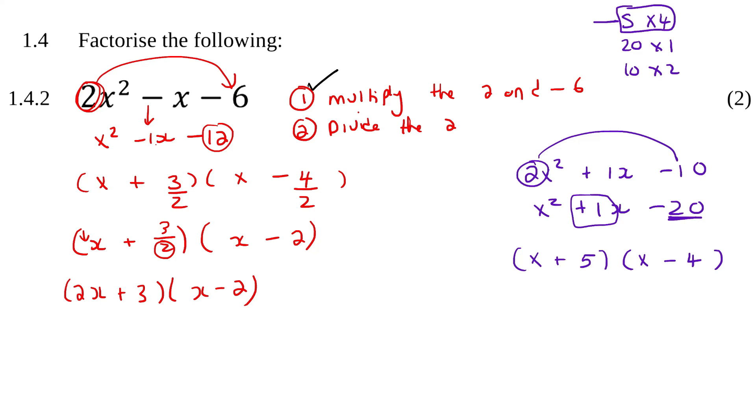So you remember how we multiplied by 2? Now we're going to divide by 2. So can 5 over 2 simplify any further? No, it can't. So then I want you to put the 2 over there. So it's going to become 2x plus 5.